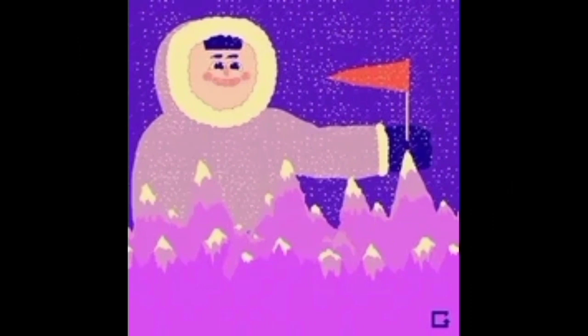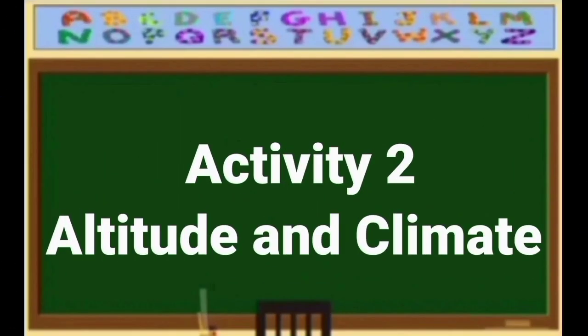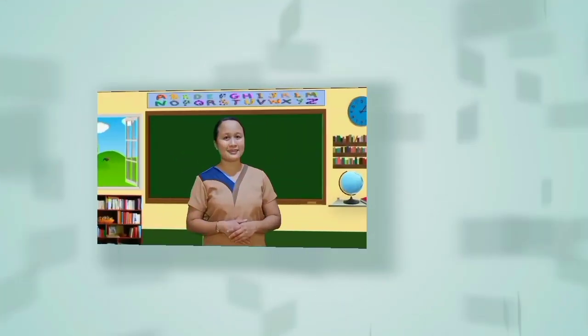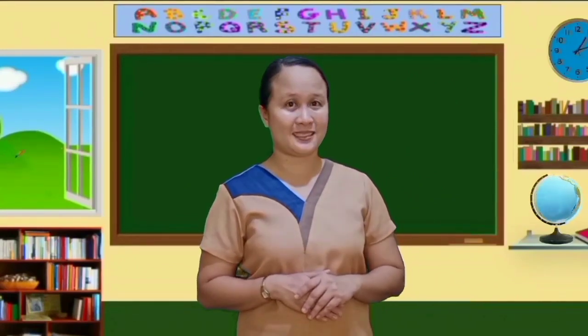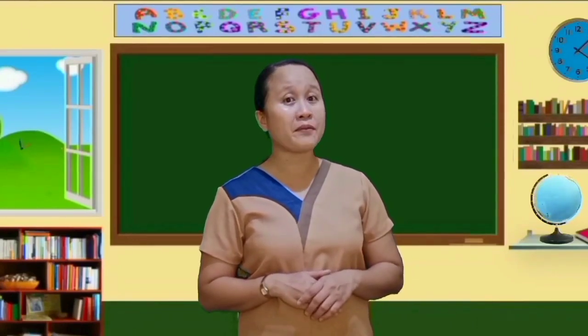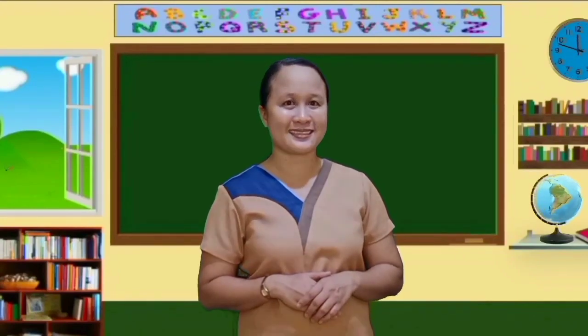Hello, junior high school learners. Are you still there? Good to hear that. Let's have another activity entitled 'Altitude and Climate.' I have some pictures of different cities in other places. All you need to do is identify whether the place is located at higher altitude or lower altitude, and the kind of climate that the place has been experiencing.